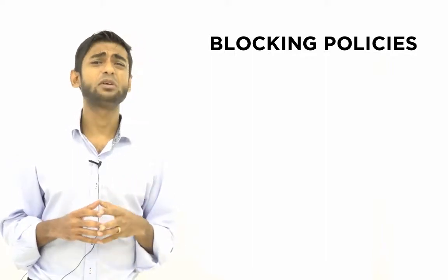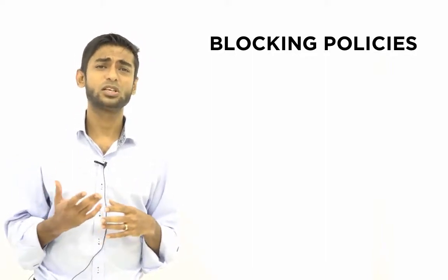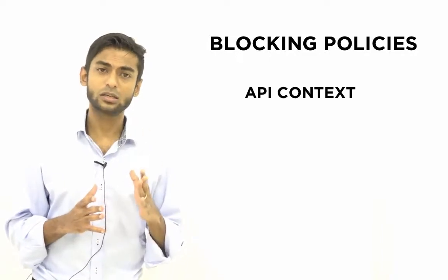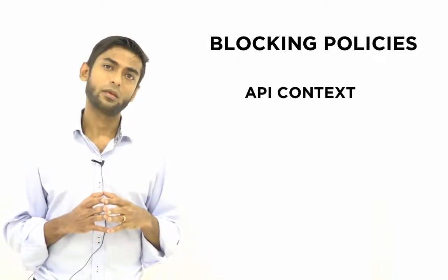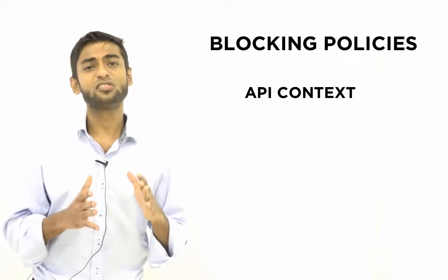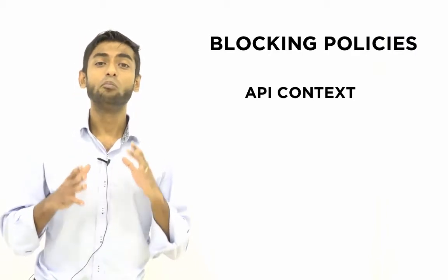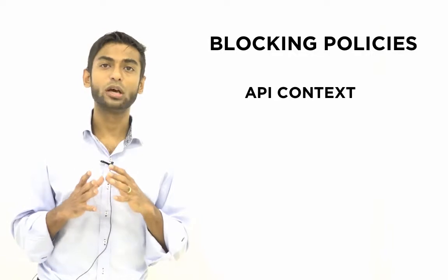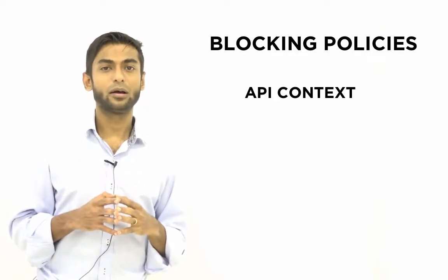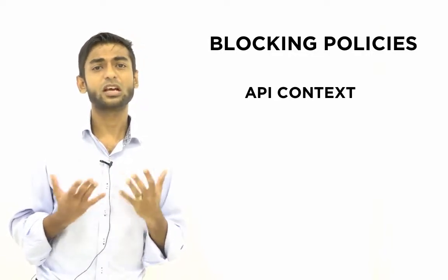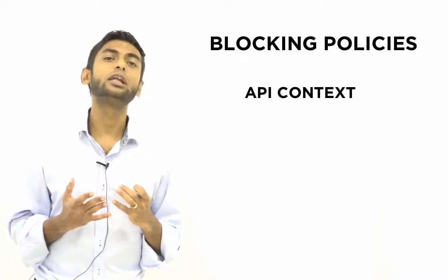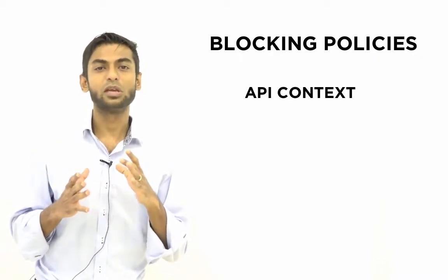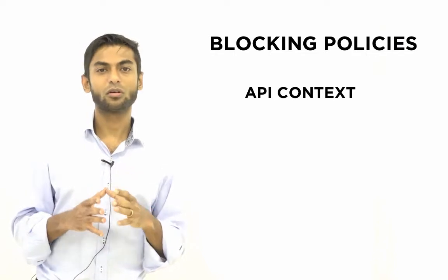Blocking policies can be created using the following parameters. The first one would be the API context. What this would result in is it would block all requests for a particular API. This can come in handy if you want to temporarily block a given API from being invoked for whatever reason.